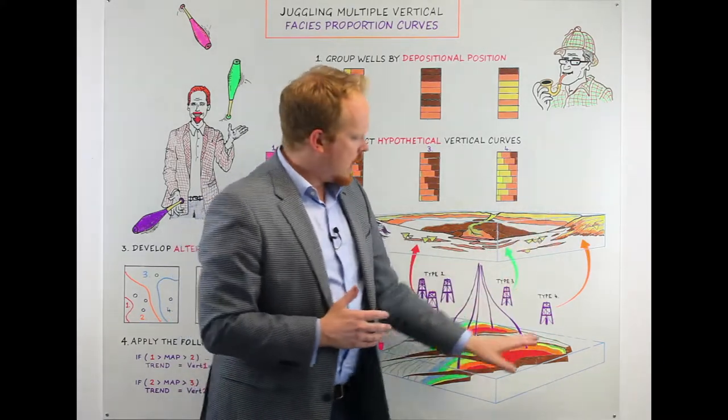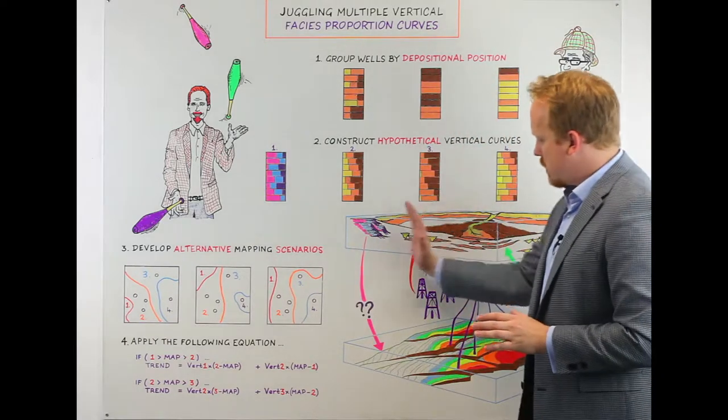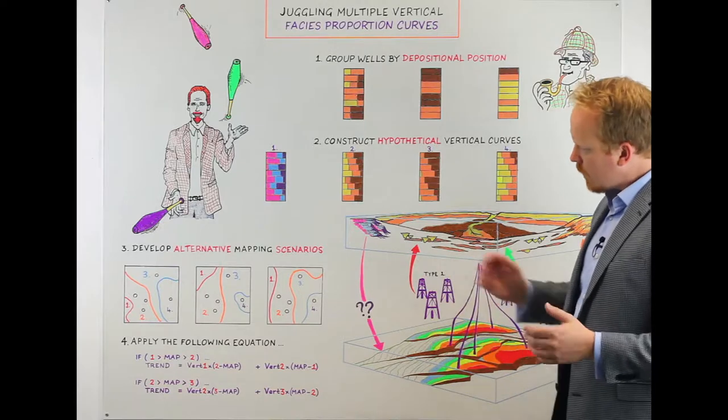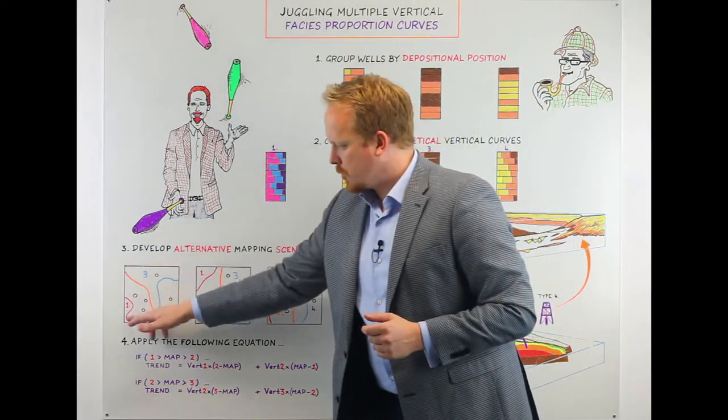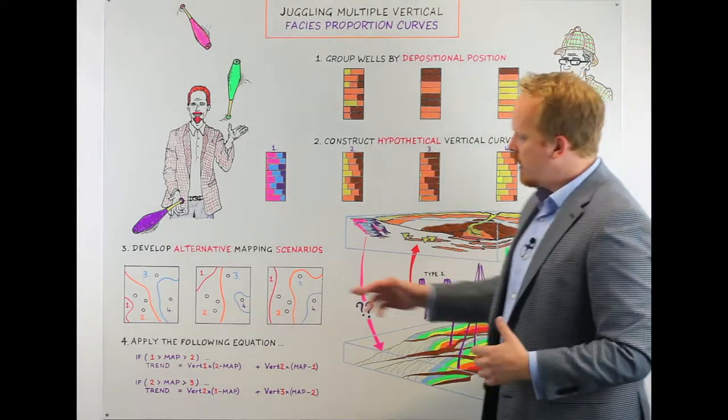That's really where it's coming from, so that we come down and say how are we going to distribute this geological behavior onto that grid. What I do then is I construct some simple two-dimensional maps. They overlay the reservoir so I can now map out where vertical curve one will exist, where two, where three, and where four should be on a map-based sense.